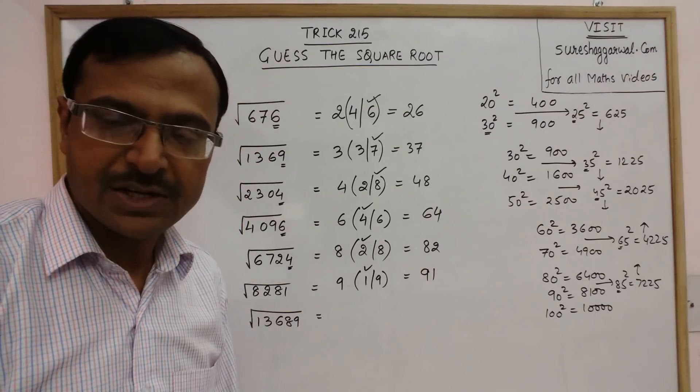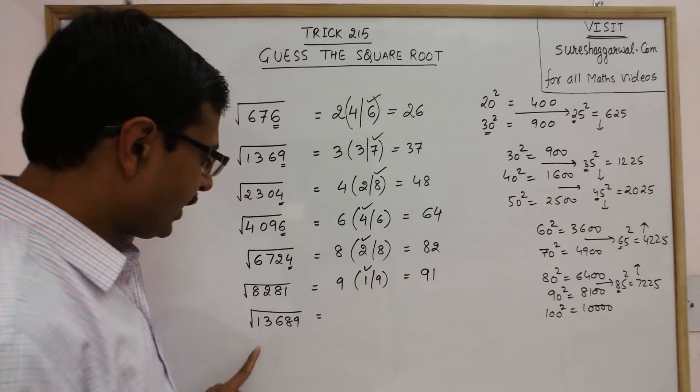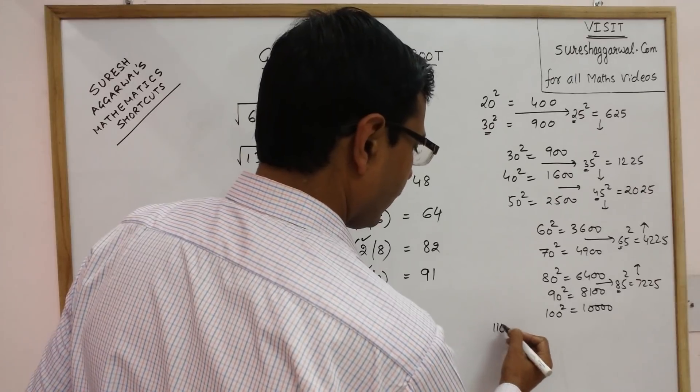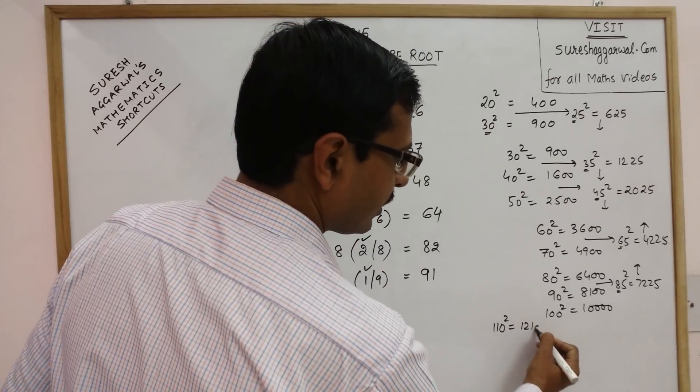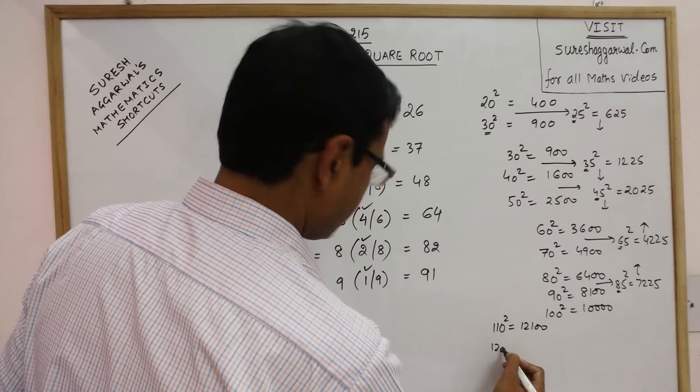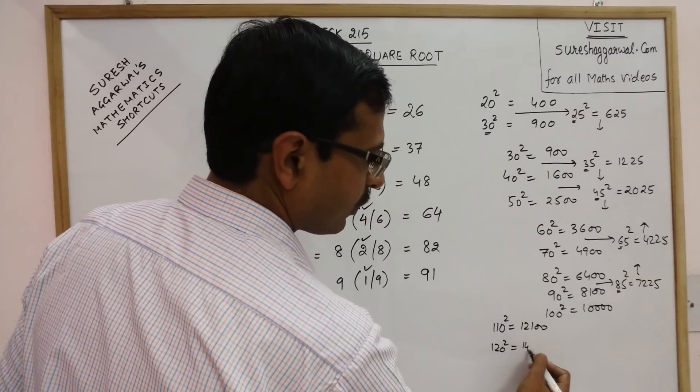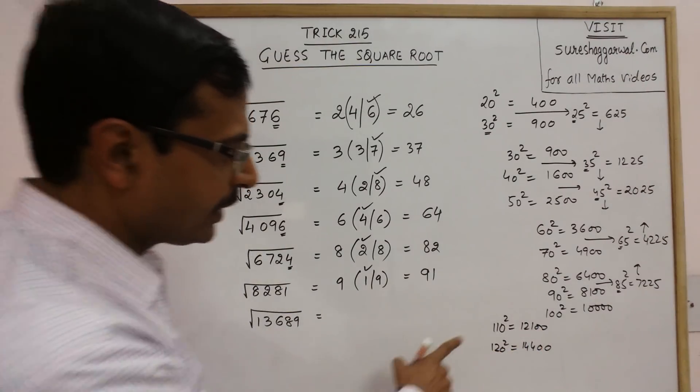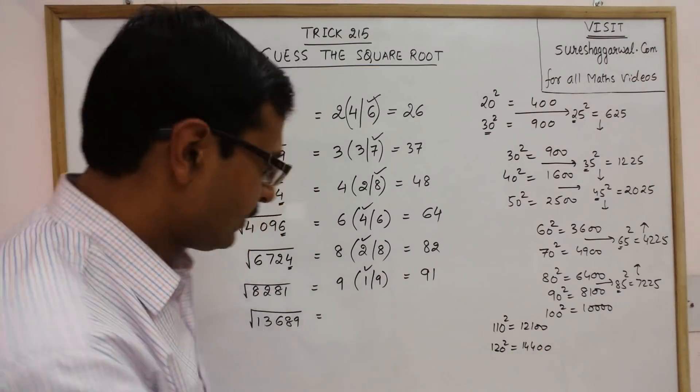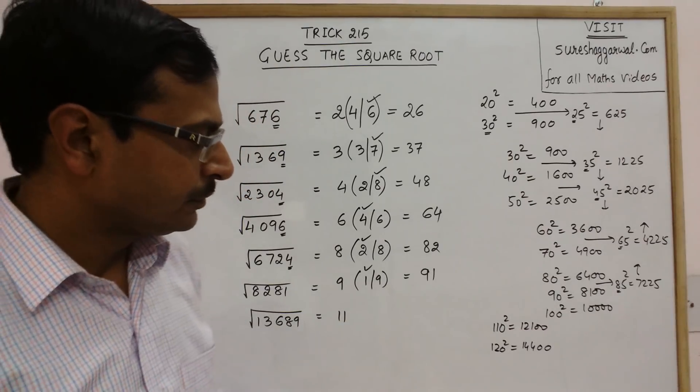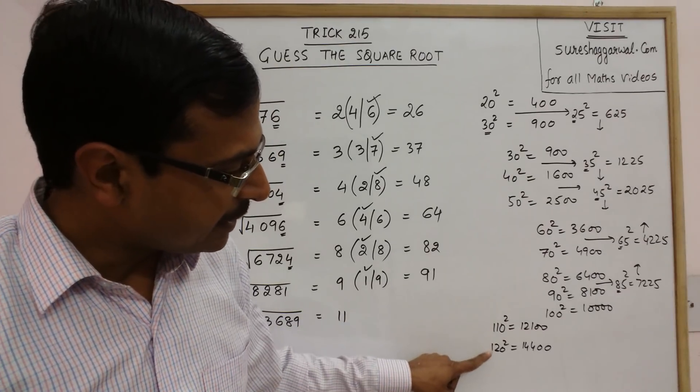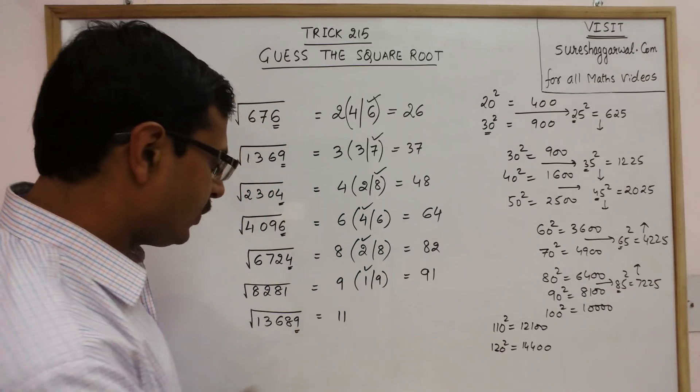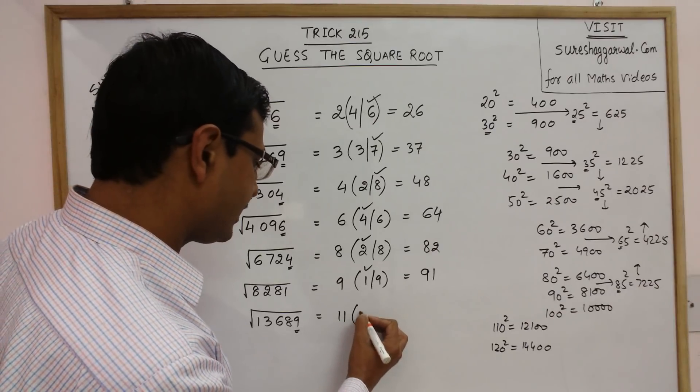Now if you take 110 square, 11 square is 121 and 120 square, 12 square is 144. Now see this number lies between these two. So 110 and 120. So obviously you will have 11. 110 and 120 between these numbers start with 11. And now check the unit digit 9, either this is 3 or 7.